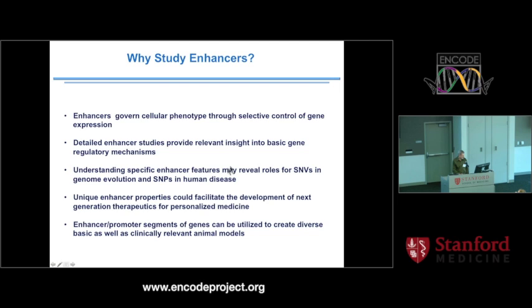The single nucleotide variants and SNPs in human disease are extremely important. The context in which these SNPs or variants exist are primary determinants of how that SNP will actually behave, regardless of whether it's located in a binding site for a particular transcription factor or not. Understanding enhancer properties is also important for therapeutic development, because there's a unique specificity with respect to the regulation of genes that may have therapeutic value.